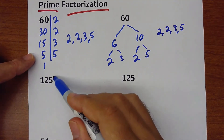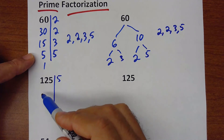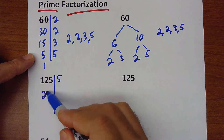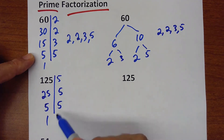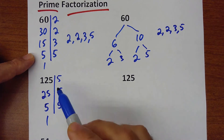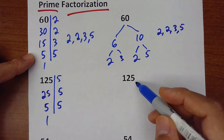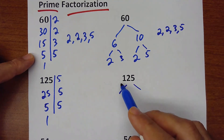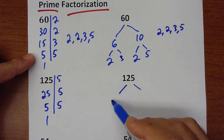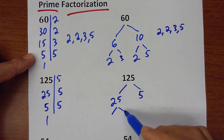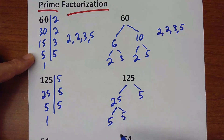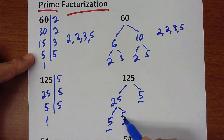Let's do it for 125. Divide it by 5, it will be 25. Divided by 5 is 5. Divided by 5 is 1. Done — so 5, 5, and 5. Using the other method: 125 is 25 times 5, and this 25 is 5 times 5. So we get three 5s — the same result.